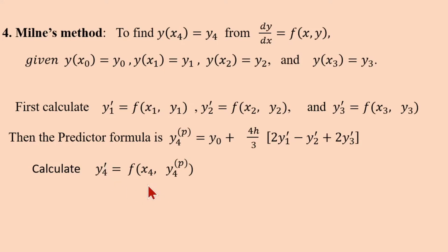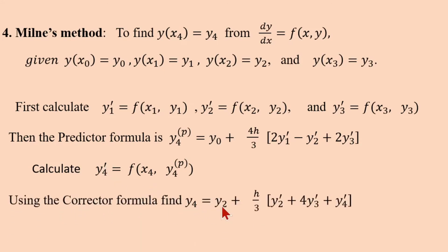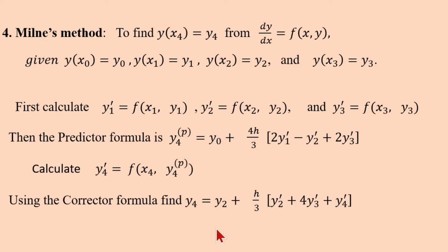After calculating y₄', use the corrector formula: y₄(corrector) = y₂ + (h/3)·(y₂' + 4y₃' + y₄'). In your syllabus, you apply the corrector formula only once. In practice, you could resubstitute y₄ repeatedly for better approximation, but for this course one application is sufficient.